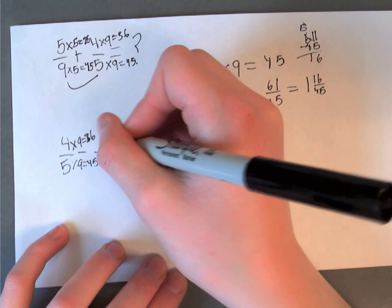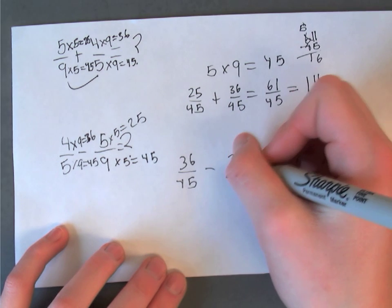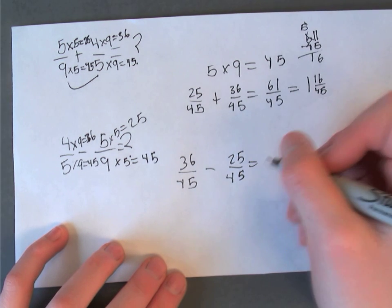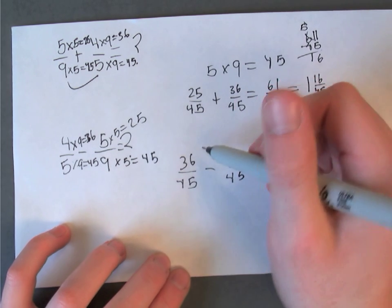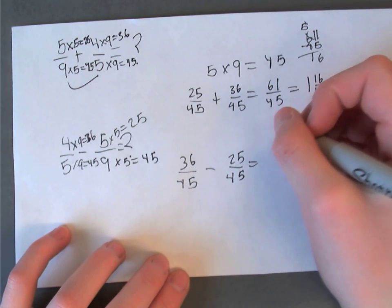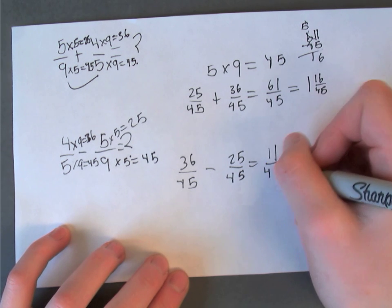So that's 25 over 45. So now we just subtract the numerators. So that would be 11 over 45.